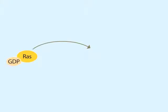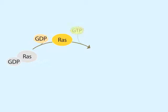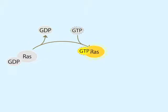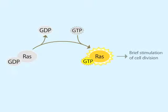In its inactive state, RAS is bound to GDP. When RAS is stimulated, it releases its GDP and takes up GTP. When bound to GTP, RAS is active and can activate other proteins, resulting in a brief stimulation of cell division.